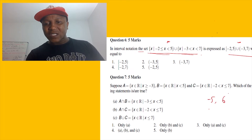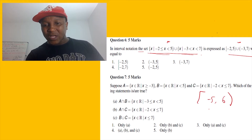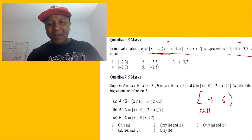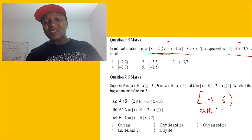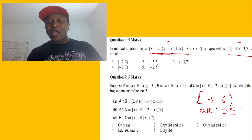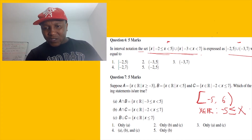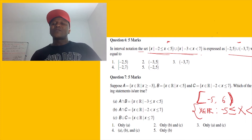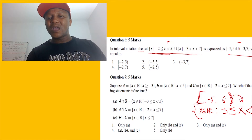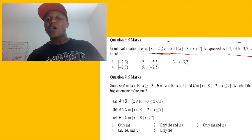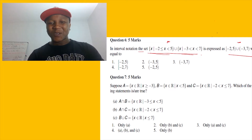For example, if somebody says negative five to six, with this bracket including and this one excluding, if you want to write it in set-builder notation, you say x is an element of real numbers, and then you write the number you start with — negative five — and since it's including you write less than or equal to, then x, then since the end is excluding you write less than six with a curly bracket. That's how you change from interval to set notation. Now let's go to the actual question.